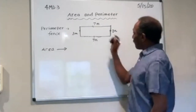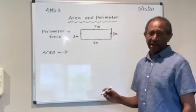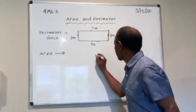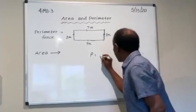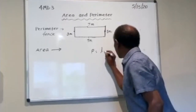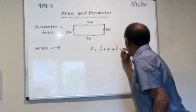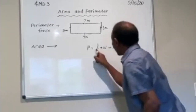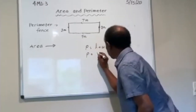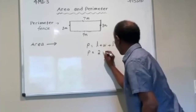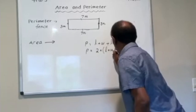So in fourth grade, you are going to use a formula to find the perimeter. There are two different ways you can do it. Perimeter equals length plus width plus length plus width — this is L. Or you could write P equals two times the quantity length plus width.